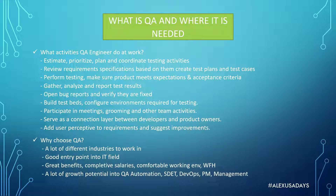QA engineers perform testing to make sure the product meets expectations and acceptance criteria. They gather, analyze, and report test results — sometimes testing on multiple platforms, multiple devices, multiple builds — accumulating this information, analyzing it, and sending out a report on how it looks overall. They also open bug reports when they find issues, and once developers fix the bugs, they verify the issues were actually fixed and that no new issues were introduced.